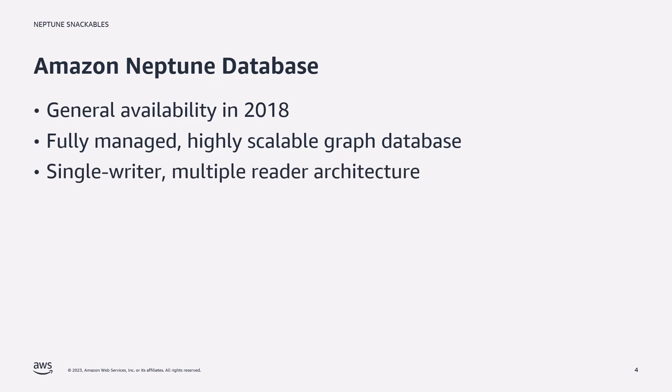Neptune database supports a single writer multiple reader architecture. When you create a cluster you set a configuration based on the number of instances you want to use — for example, one writer and two read replicas. Neptune database also supports serverless, which provides the flexibility to scale vertically based on the processing demands of your workload. For horizontal scaling with variable read traffic, you can use read replica auto scaling to automatically increase and decrease the number of replicas in your cluster.